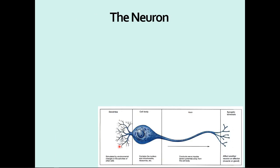To recap the six neuroglia cells: four are in your central nervous system — astrocytes, oligodendrocytes, microglia, and ependymal cells. The last two neuroglia cells are in your peripheral nervous system: satellite cells and Schwann cells.